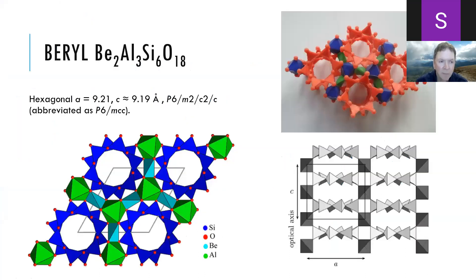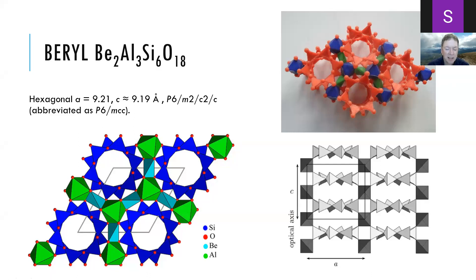As you all know, beryl is a beryllium aluminum silicate mineral. Looking down the c-axis, the crystal structure is made up of SiO4 tetrahedra joining together to make Si6O18 rings. In the middle of these rings are large channels where we can put water molecules and large cations like sodium. The rings are held together by aluminum in octahedral coordination and by beryllium in distorted tetrahedral coordination.